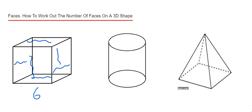Let's do the cylinder next. We have a circular face at the bottom and another one at the top, and then we have a rectangular face around the middle, which makes three faces.